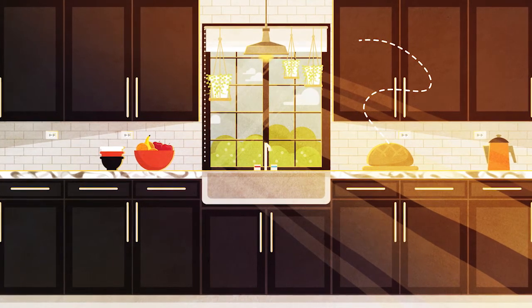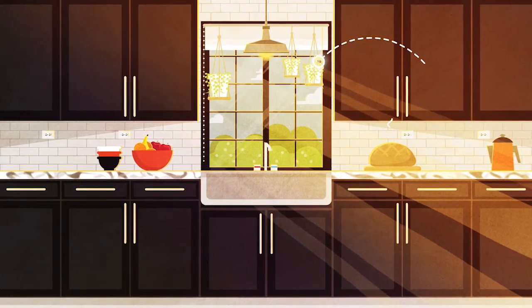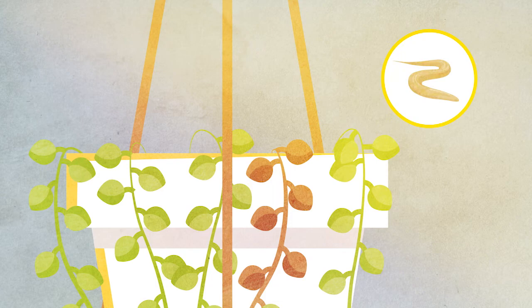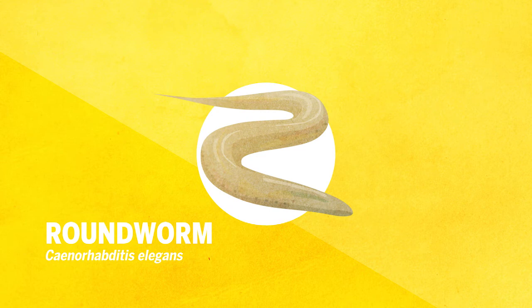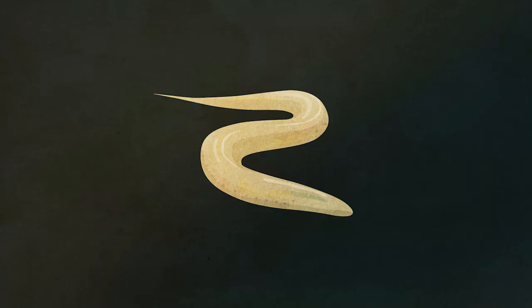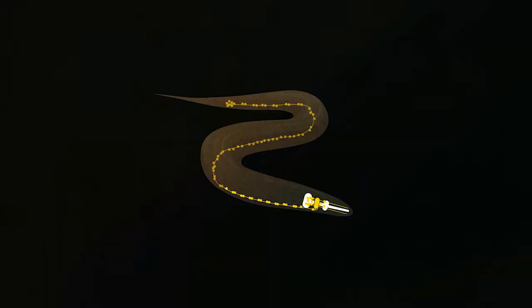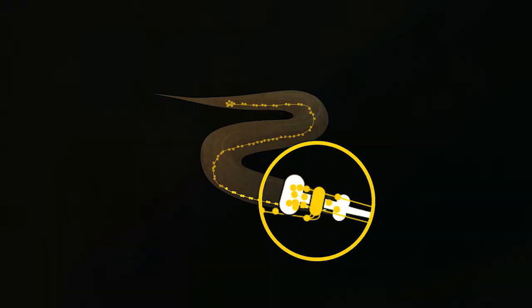And even millimeter-long transparent worms called C. elegans can help us understand more about how our bodies function and respond to disease. Despite its small nervous system, C. elegans can perform many behaviors that correspond to complex human behaviors. That's one reason why Life Sciences Institute faculty member Sean Zhu uses it to study the biology of our senses.